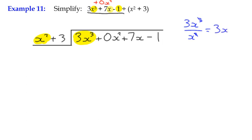So we've got 3x that we're going to write down and we'll put that above the 7x just to keep that kind of place value thing going on. We multiply 3x by the divisor which gives us 3x cubed and then 3x times 3 is plus 9x.